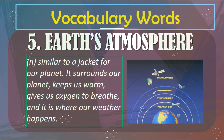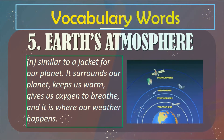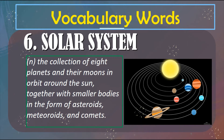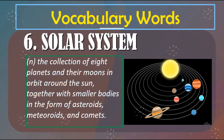Number five: Earth's atmosphere. Earth's atmosphere is similar to a jacket for our planet. It surrounds our planet, keeps us warm, gives us oxygen to breathe, and it is where our weather happens. You can see in the picture that there are different layers of Earth's atmosphere. Number six: Solar system. The solar system is the collection of eight planets and their moons around the sun, together with smaller bodies in the form of asteroids, meteoroids, and comets.